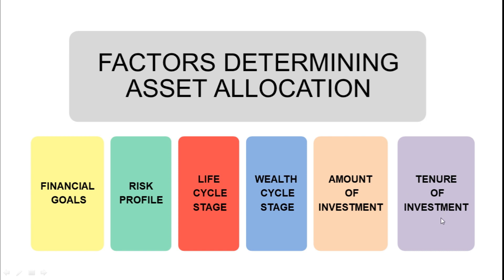The tenure of investment also matters. If you need funds after one month, one year, two or three years, or ten years — whether you are a short-term or long-term investor — these all determine where you should allocate assets. If the tenure is less, you should allocate assets in money market instruments, more liquid funds, and short-term debt funds, which are liquid and allow you to reap benefits in a shorter period of time. Whereas if you want to invest for longer period for capital appreciation, you must invest in real estate and long-term equity-oriented funds — schemes generally held for a lock-in period of three to five years.